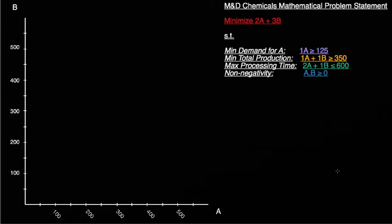Today I want to show how we solve a simple linear programming problem graphically. As my model here, I've chosen the M&D Chemicals problem from the Anderson text on page 52. M&D Chemicals is a provider of chemicals which are used by other companies to produce some final products. So M&D produces intermediate inputs.